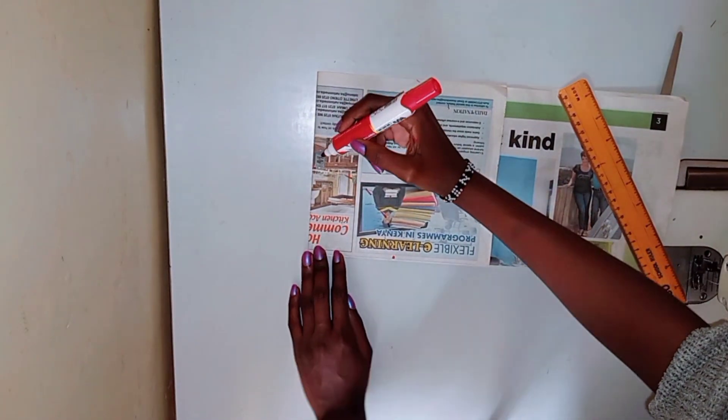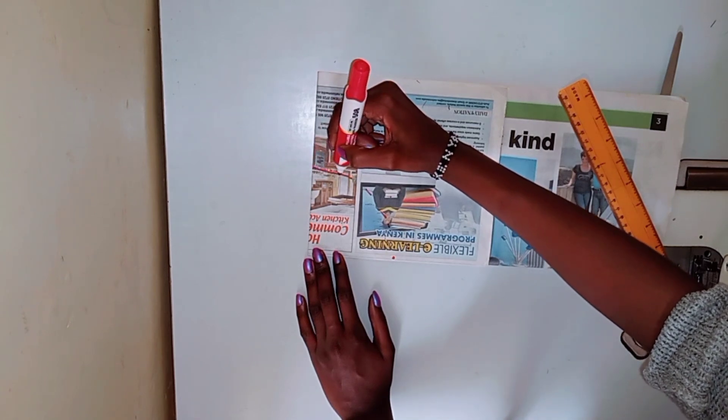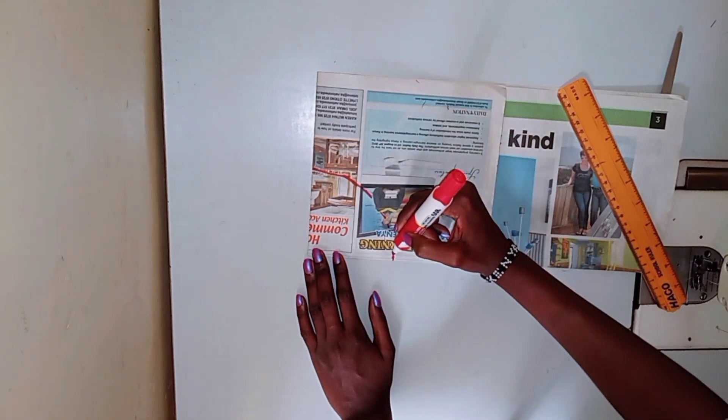After you mark the 3.6 inches, you're going to connect the dots like so and then cut it out carefully. This will be the pattern for the crown of your bucket hat.